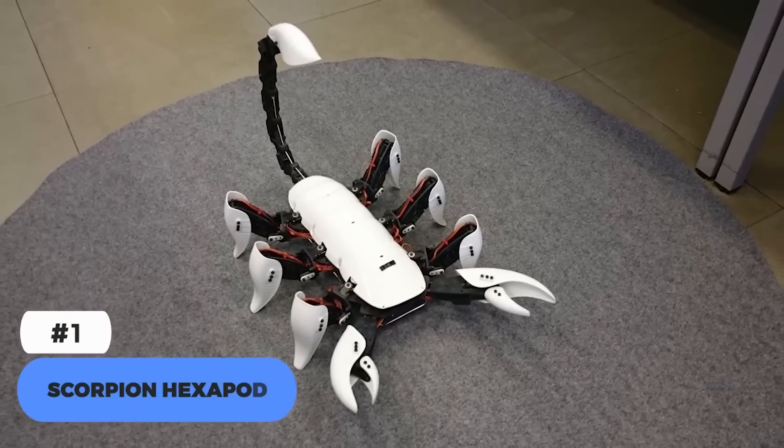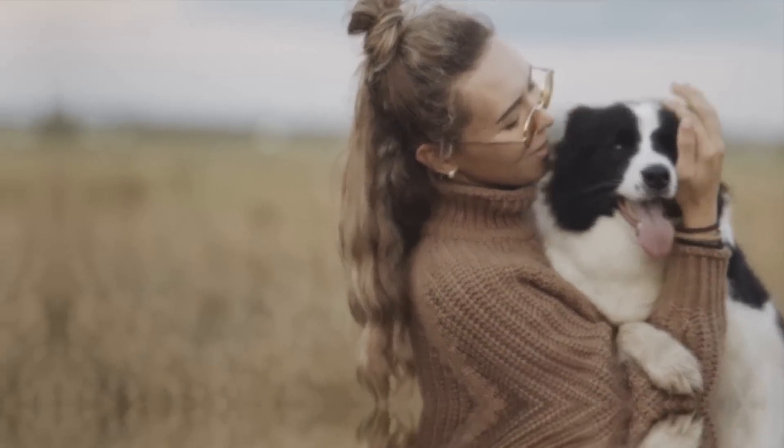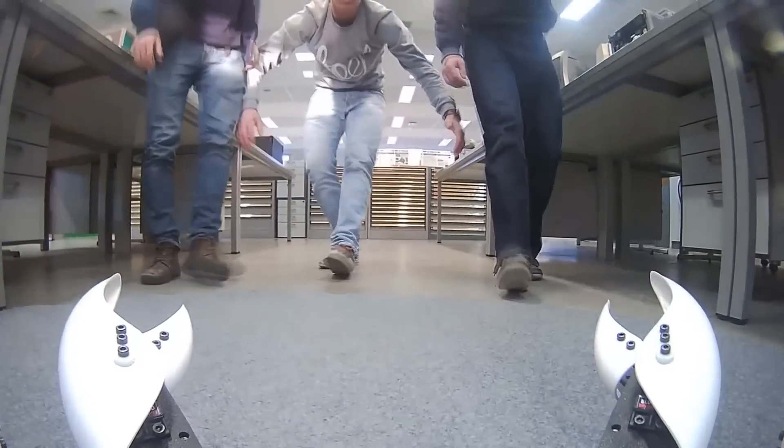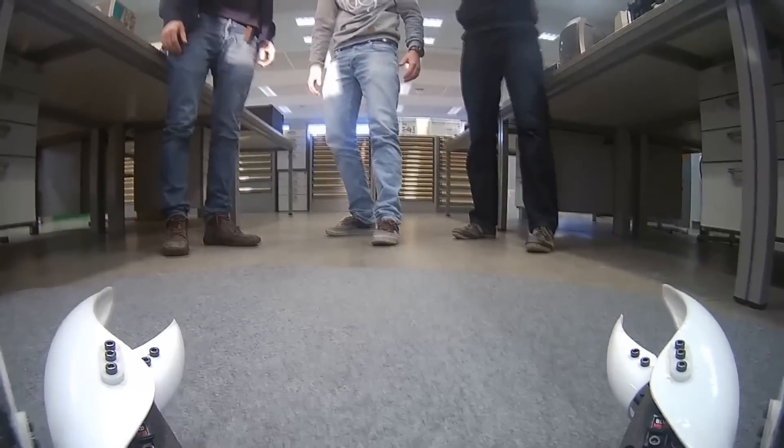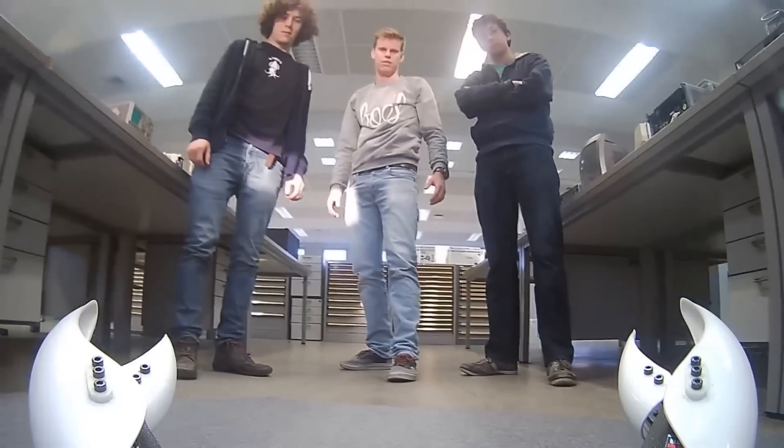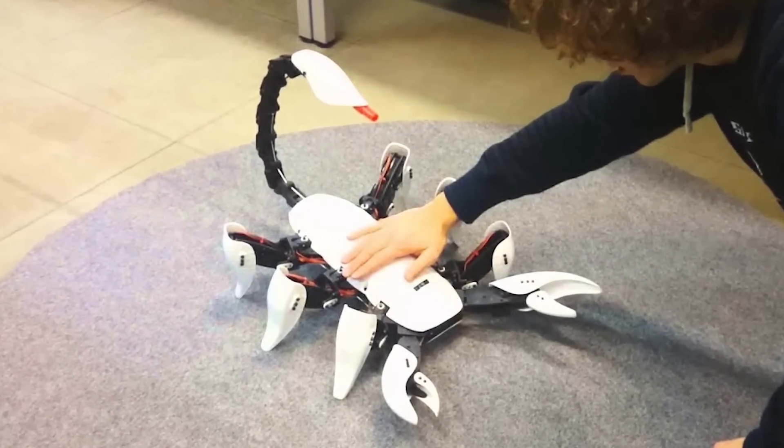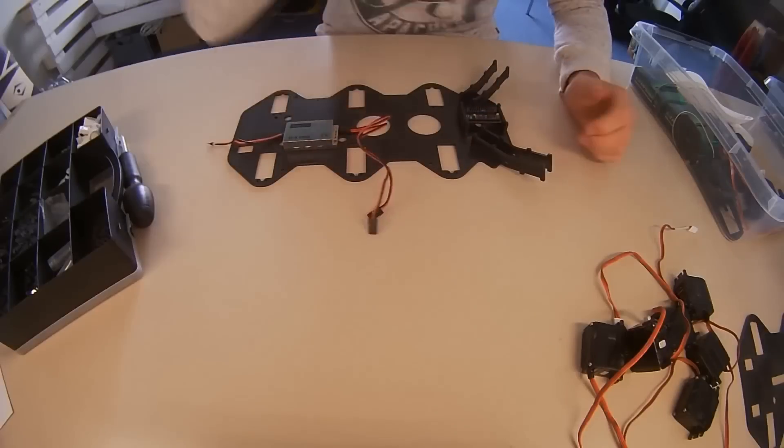Here is number one on our list, Scorpion Hexapod. Do you want a pet that can actually sting you? Consider getting a scorpion. The Scorpio Hexapod, which was designed by Ghent University in Belgium, is most likely the best option for you to go with. This is a robot that was designed to look like a scorpion, but that was not the original concept.